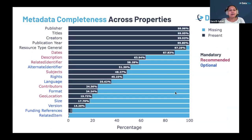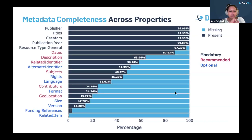One of the key metrics we focus on is metadata completeness — the degree to which each property in the schema is filled out for every DOI. Complete metadata is essential for making research outputs truly FAIR. This graph breaks down the completeness of each of the 20 metadata properties. As you would expect, the mandatory properties are generally well annotated, and we also see positive trends in recommended and optional properties.